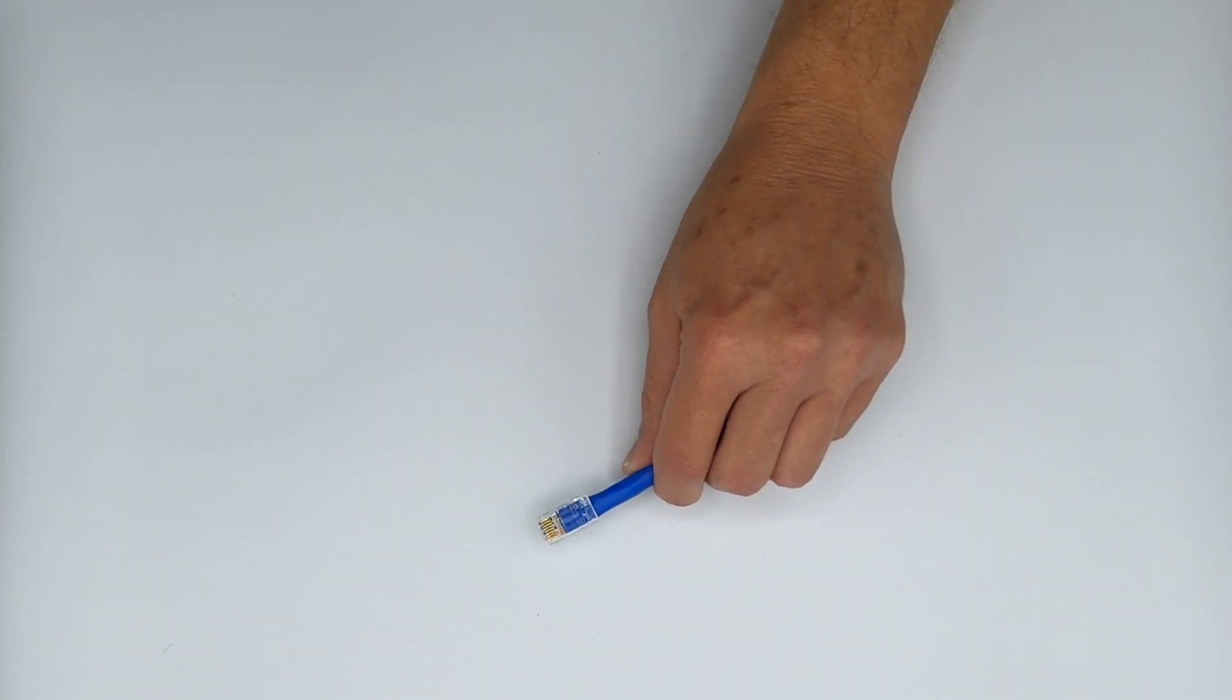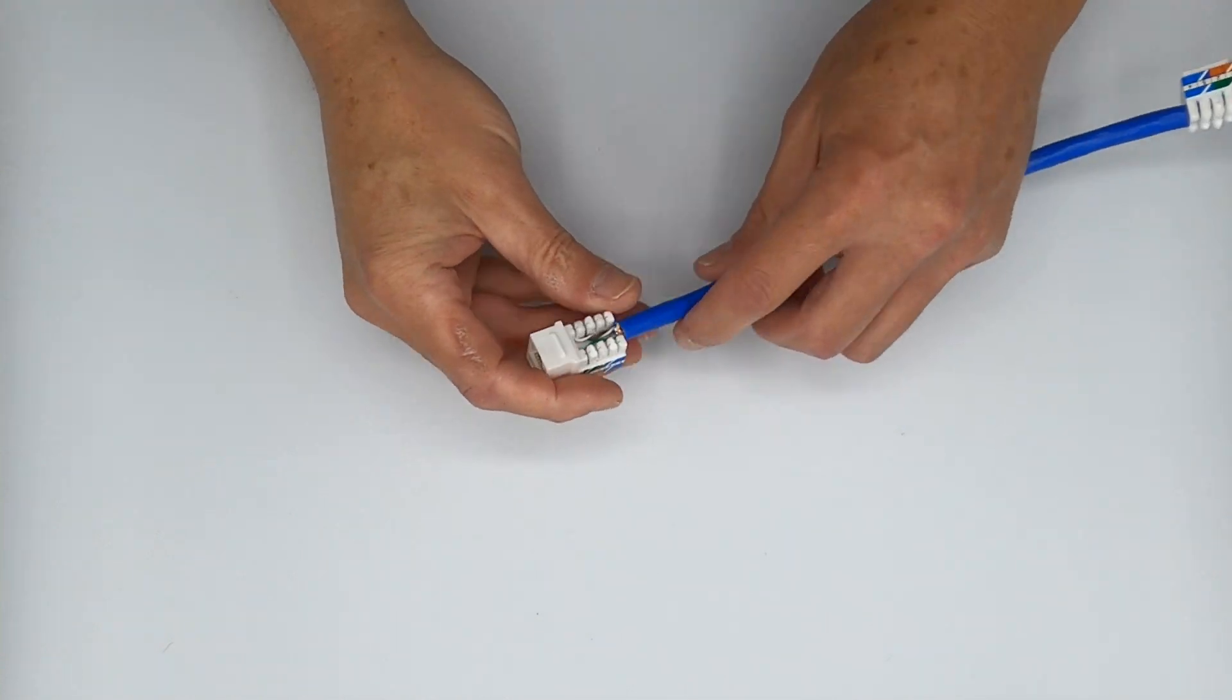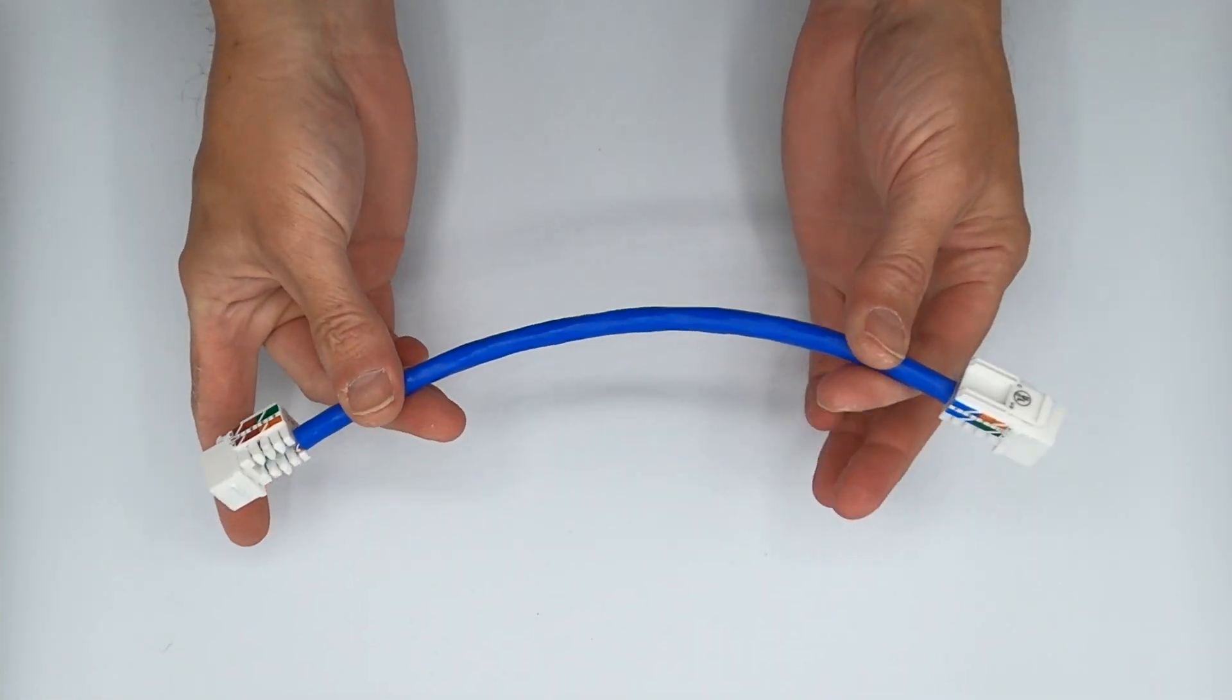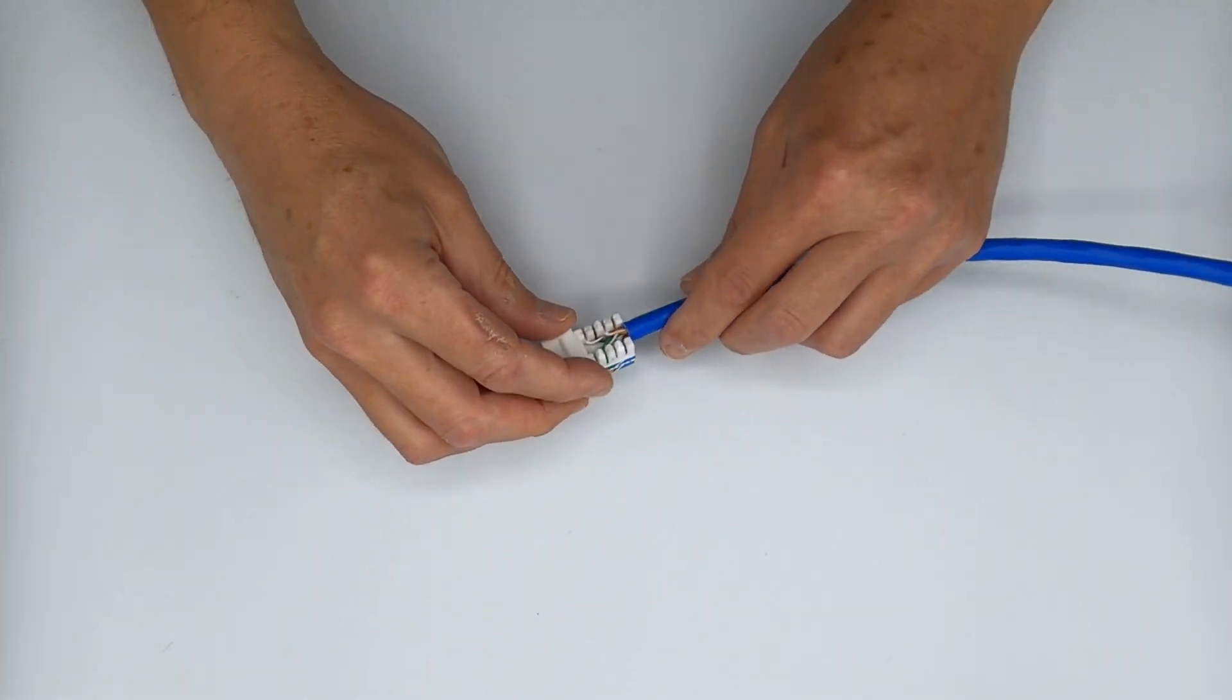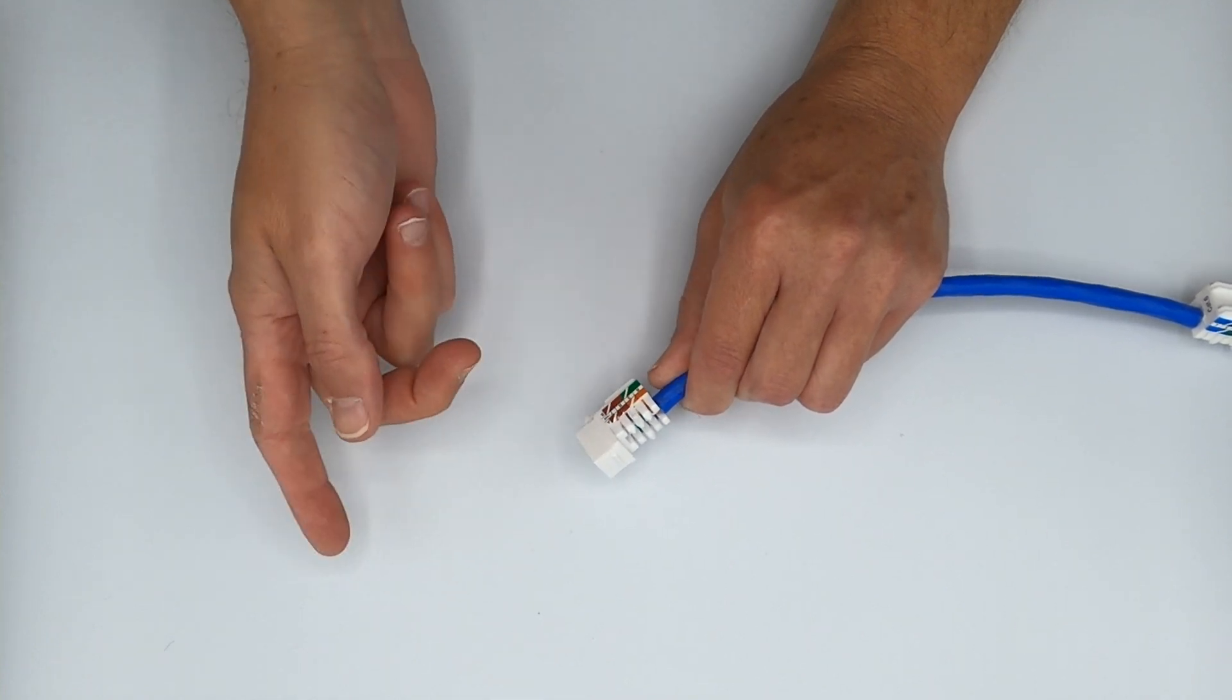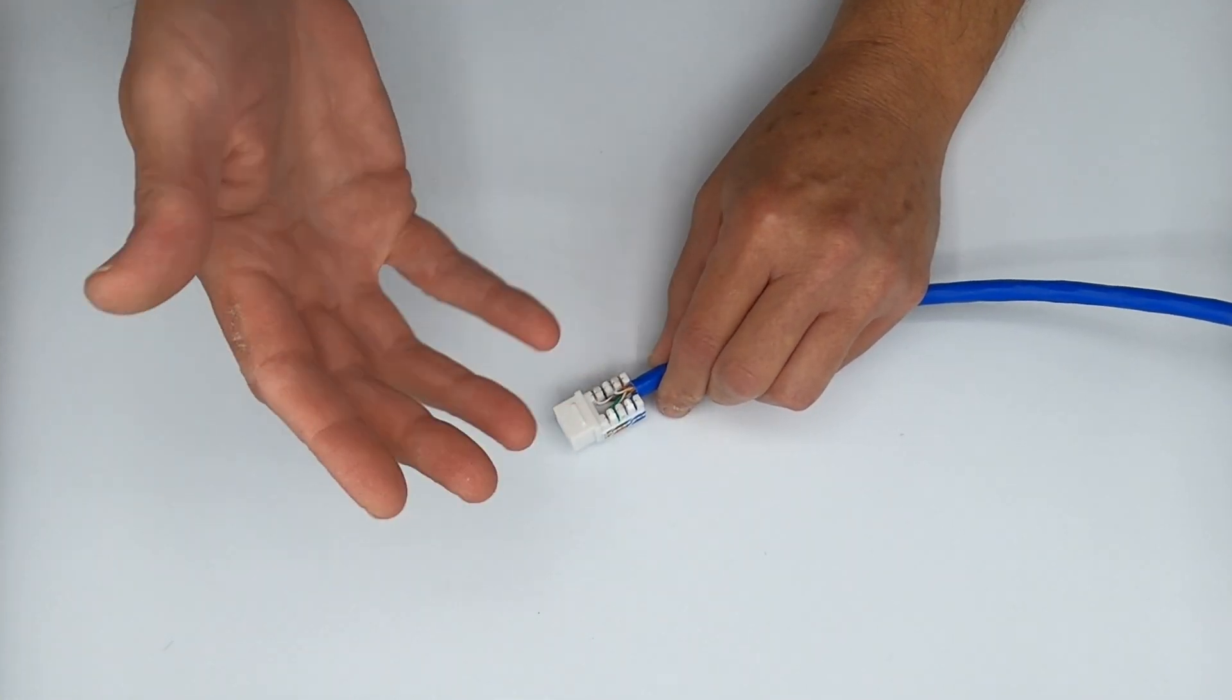How does that look in regards to a different type of termination altogether? This is called a keystone jack, and I terminated both ends of this little bitty cable here so I could show you. This is a properly terminated keystone jack. I happen to terminate just to the A side instead of the B like I normally do.